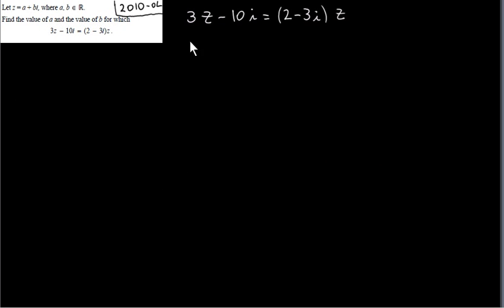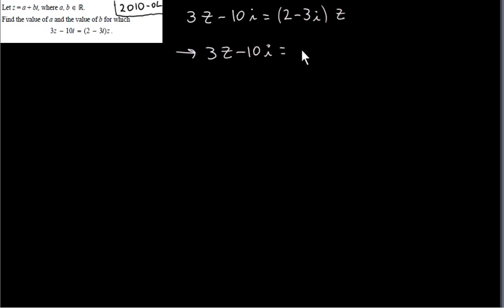Let z equal a plus bi, where a and b are real numbers. Find the value of a and the value of b for which 3z minus 10i equals 2 minus 3i times z. One way to do this is to isolate z — make z the subject of this equation. Expanding, we have 3z on the left and 2z minus 3zi on the right.